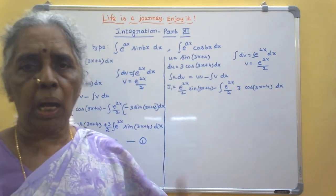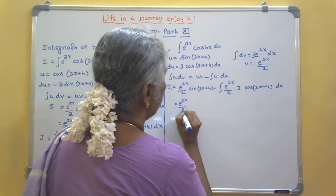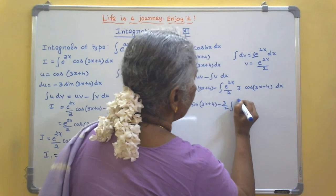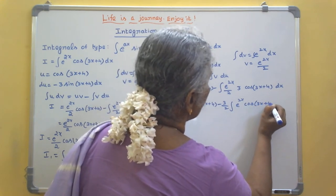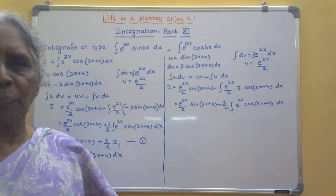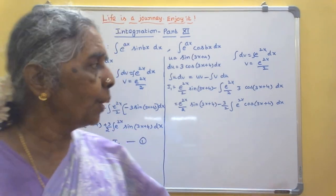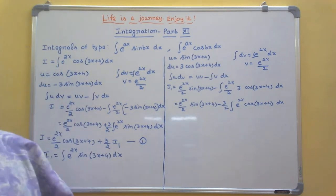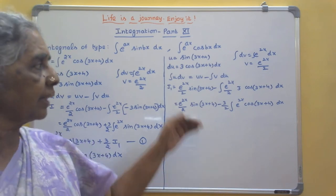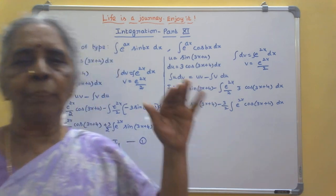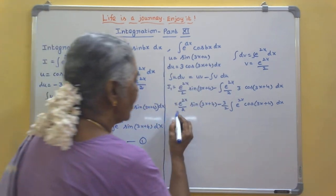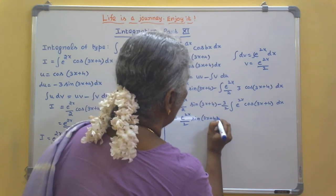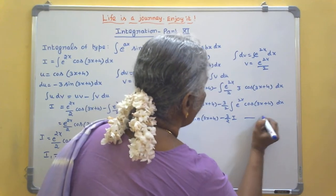So I1 equals e^(2x)/2 · sin(3x + 4) minus integral of v du, where v is e^(2x)/2 and du is 3 cos(3x + 4) dx. Take 3/2 out: I1 equals e^(2x)/2 · sin(3x + 4) minus 3/2 times integral of e^(2x) cos(3x + 4) dx. Now look — that remaining integral is exactly your I. So I1 equals e^(2x)/2 · sin(3x + 4) minus (3/2)·I. Mark this as step 2.